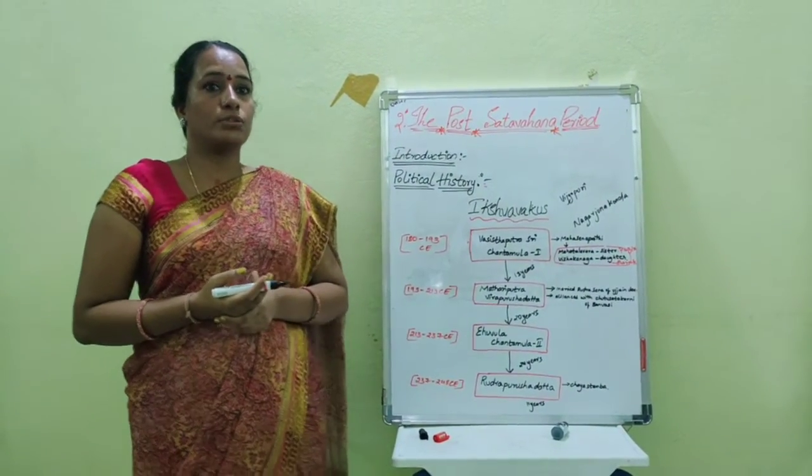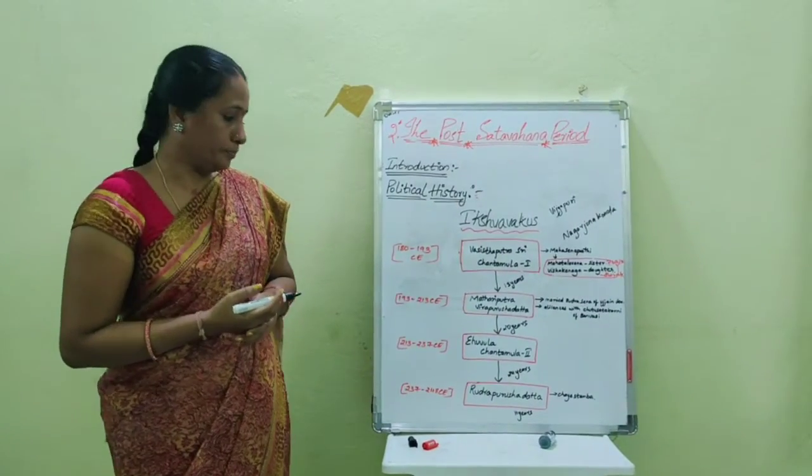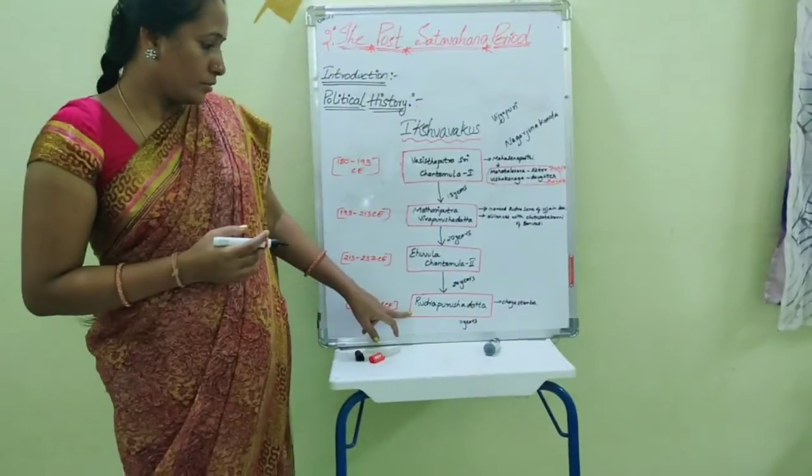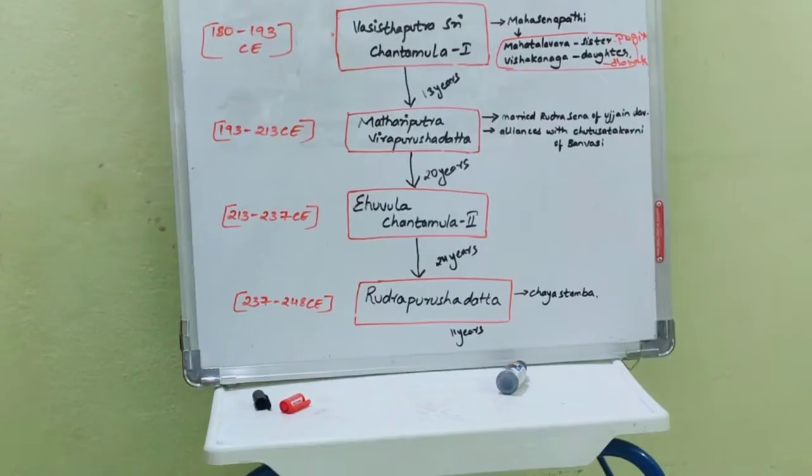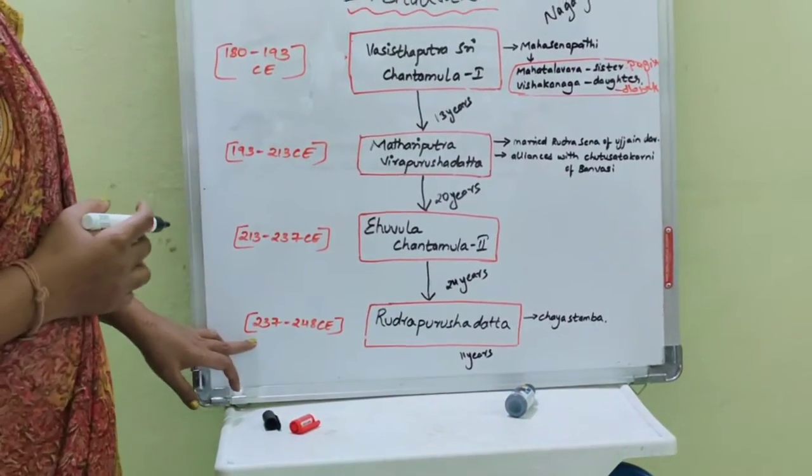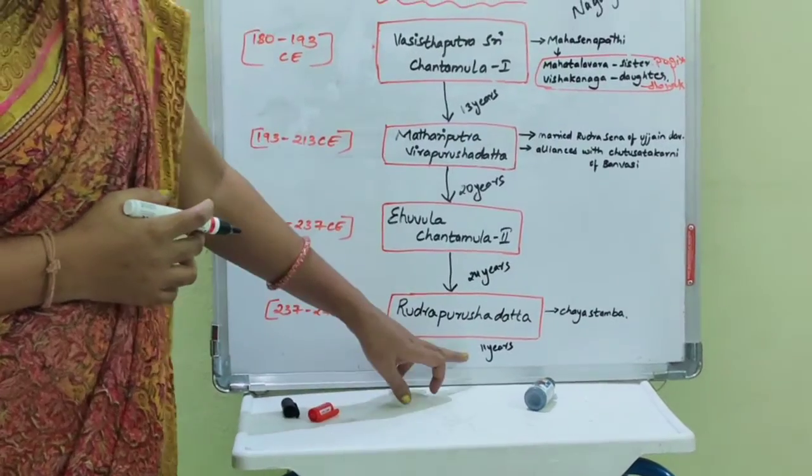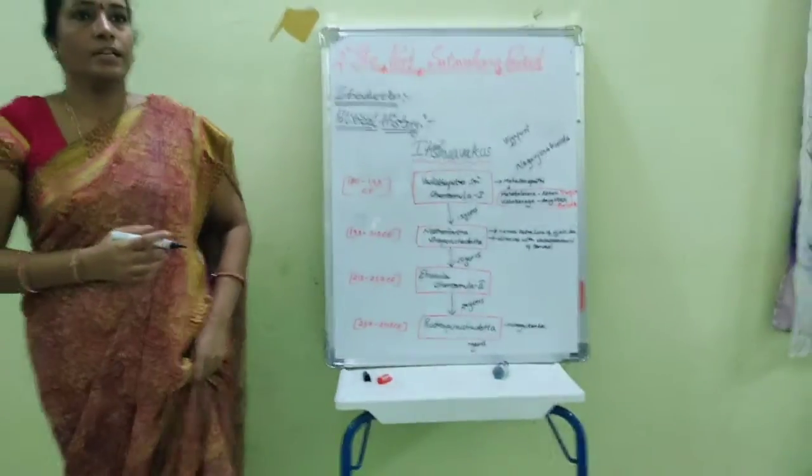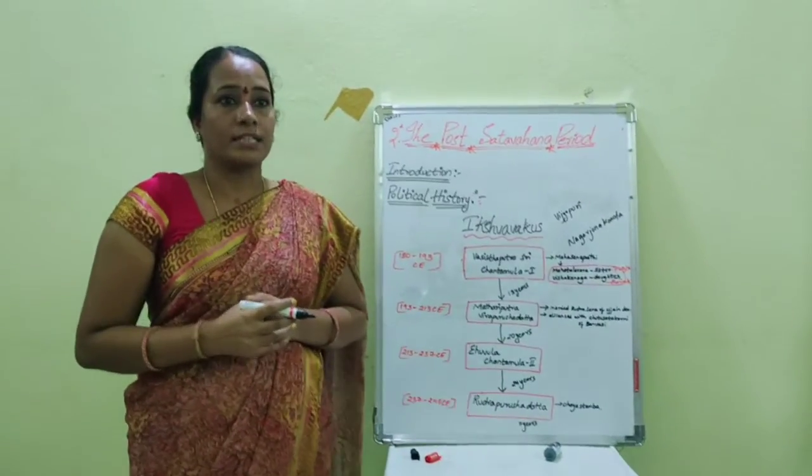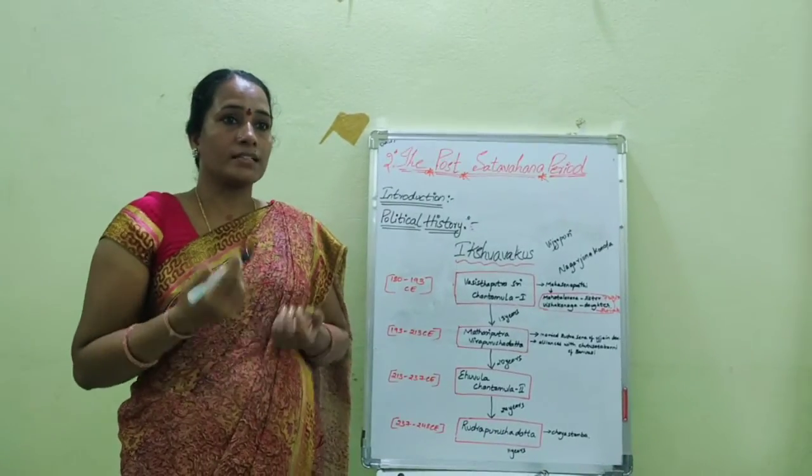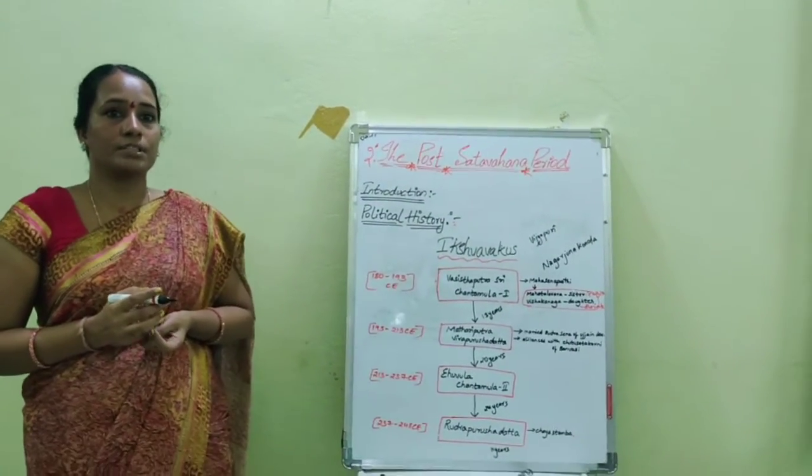Rudra Purushadatta succeeded Shantamula II, period 237-248, around 11 years. He was known for construction of Chaya Stamba as a memorial for his mother.